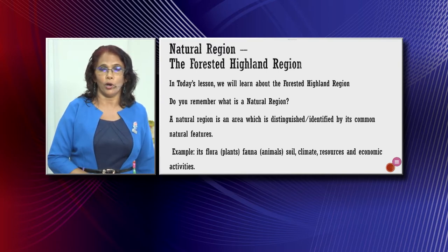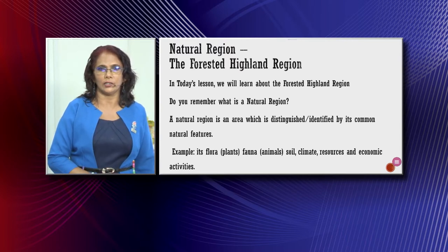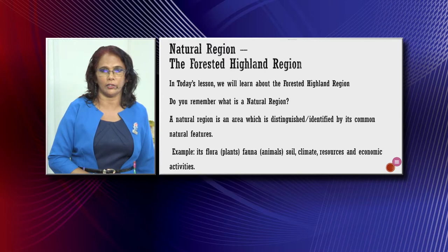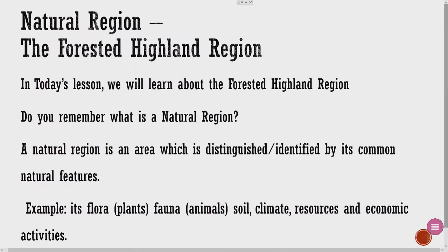Do you remember what is a natural region? A natural region is an area which is distinguished or identified by its common natural features. Examples include its flora — that is the plants — fauna, animals, soil, climate, resources and economic activities.